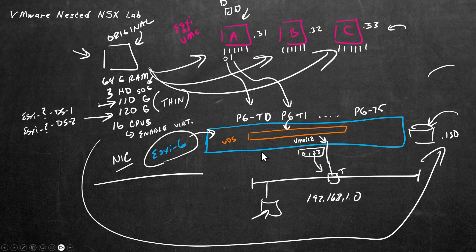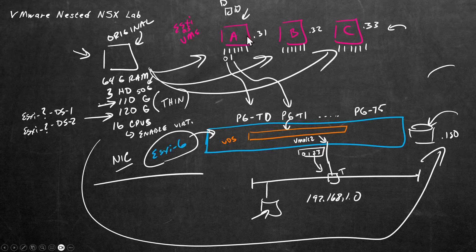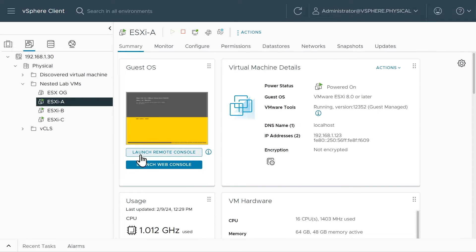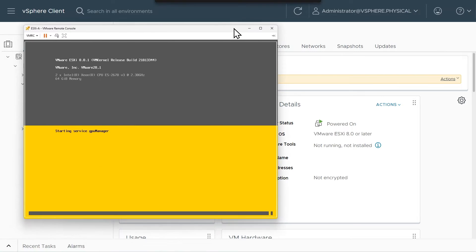To do that, from the parent environment with ESXi 6, we'll use the vSphere client once again and open up remote consoles to those three VMs we just deployed. I'll go ahead and launch remote consoles to each of those and bring them into view.